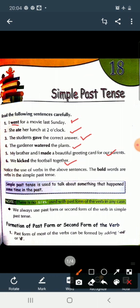Now see here: went, ate, gave, watered, made, kicked. All these are verbs. Verbs क्या होता है? Action words. Right? और यहाँ पर जो भी verbs used की गई हैं, उन्हें हमने simple past tense में use किया है.